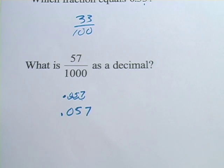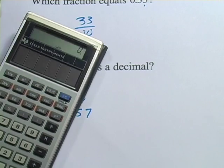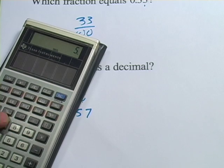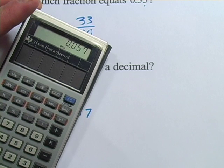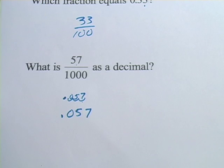If you don't believe me, check it out on your calculator. 57 divided by a thousand, and we get 0.057. So that's a little bit about writing fractions as decimals and decimals as fractions.